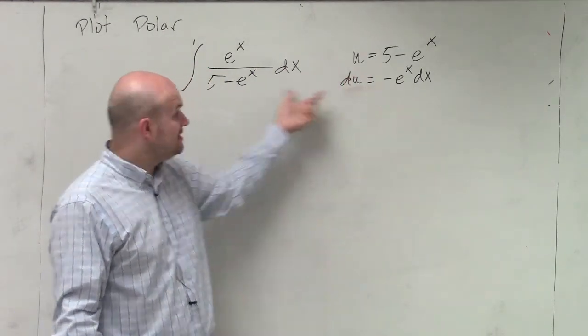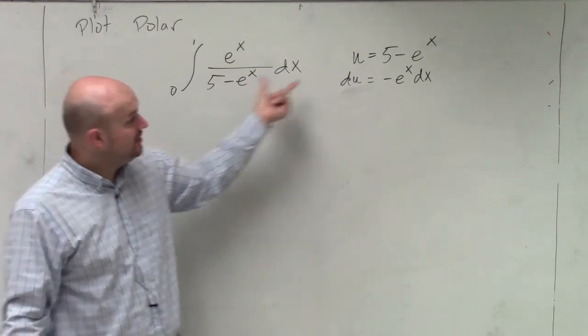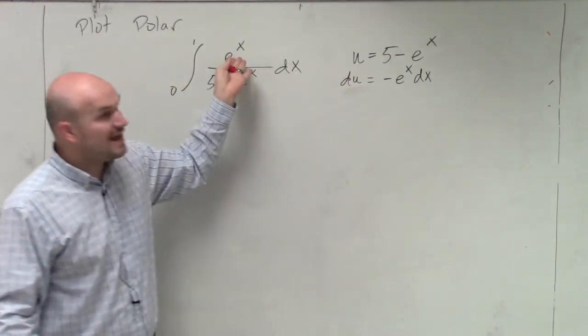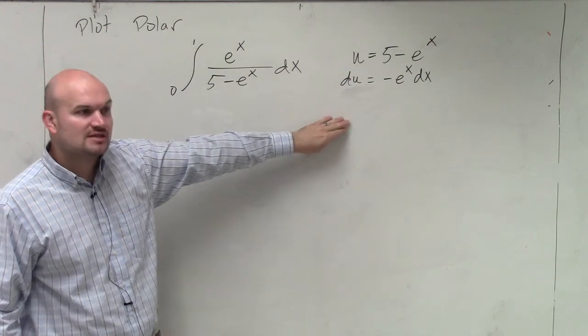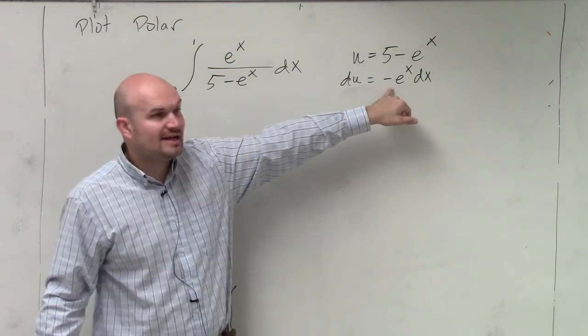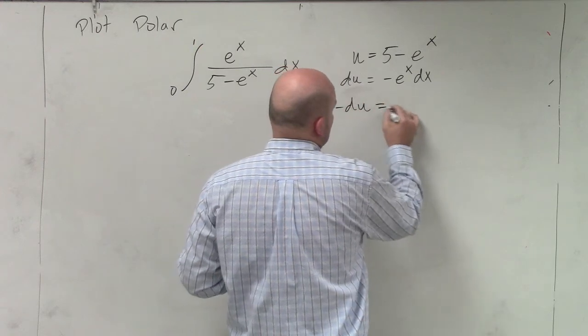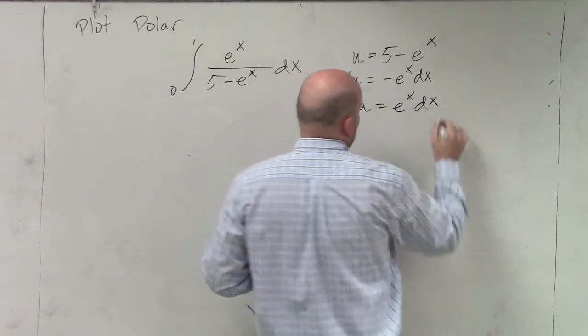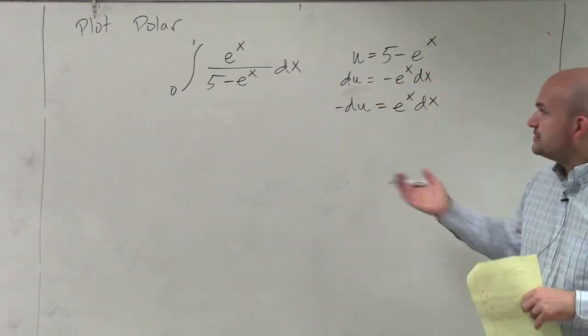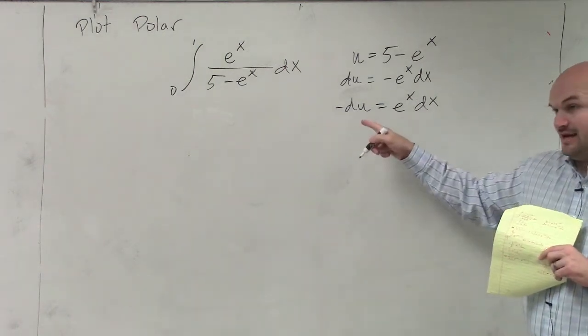And what's nice about this is you guys can see by choosing my denominator and finding my derivative, you can see I have e to the x, right? So that works as far as my u-substitution. The only thing I have extra is this negative. So I'm going to divide by negative 1 on both sides.